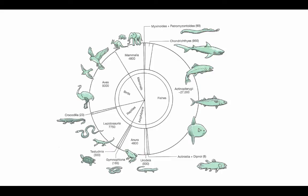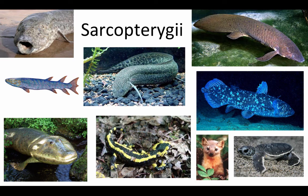If we look at the diversity of vertebrate species — a pie chart showing how many species there are in different groups — you can see that the Actinopterygii is by far the most species-rich of these individual groups. But it's important to keep in mind that everything around the other half of the circle are also sarcopterygians, part of that other lineage. So we end up getting about equal diversity between the actinopterygians and the sarcopterygians. The sarcopterygians have just diversified into higher-level taxonomic groups.